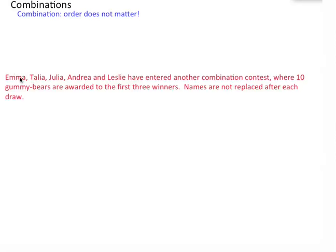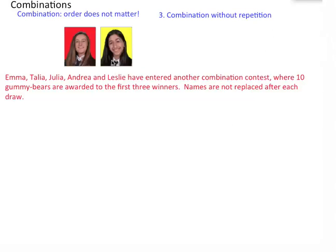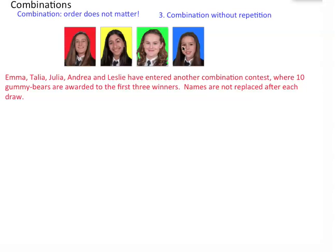So in this situation, Emma, Talia, Julia, Andrea, and Leslie have entered another combination contest where ten gummy bears are awarded to the first three winners. It doesn't matter if you're picked first, second, or third — you're going to get ten gummy bears. Names are not replaced after each drawing, so this is without replacement, without repetition — scenario three, combination without repetition. We have five people but we're only picking three.